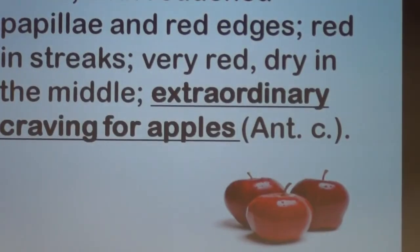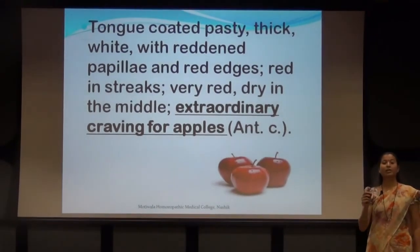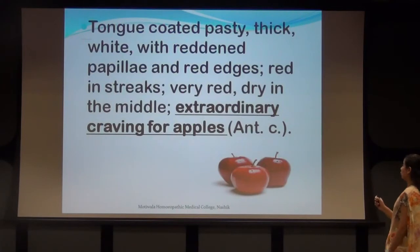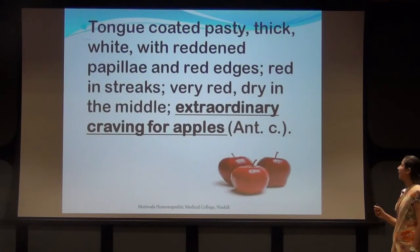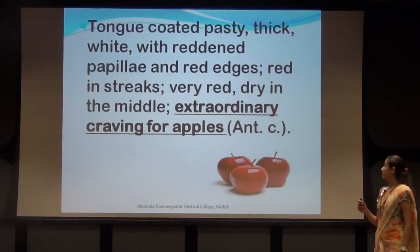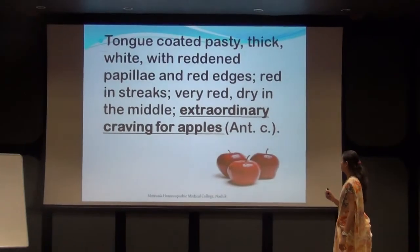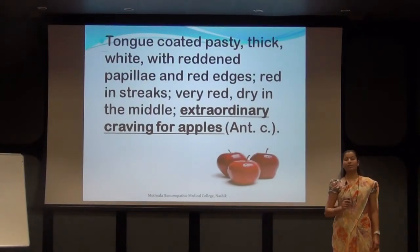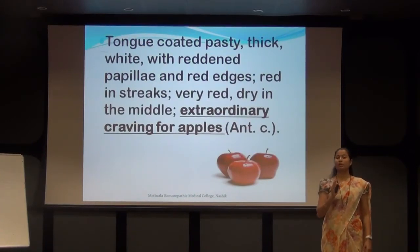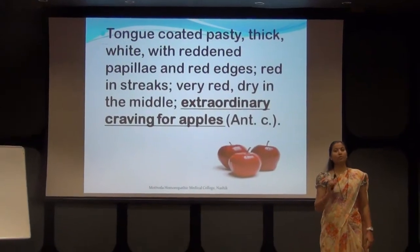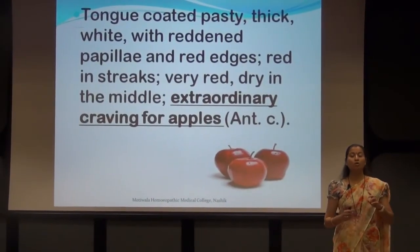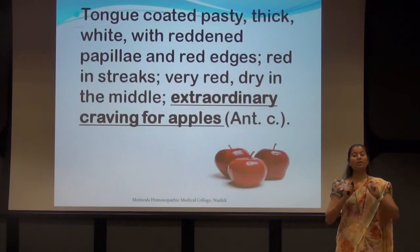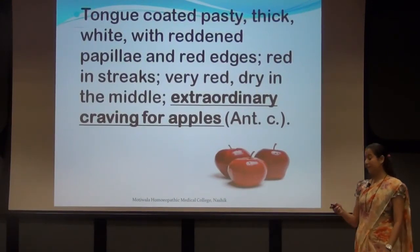The tongue is very characteristic in this remedy, as in Antimonium Crudum also. The tongue is coated pasty white, thick white with reddened papillae and red edges, red strips, very red and dry in the middle. There is an extraordinary craving for apples, like Antimonium Crudum. You should never forget to examine the tongue of the patient — it is very important in selecting the remedy. The tongue is pasty white with raised red papillae, red margins, and red strips in the middle.